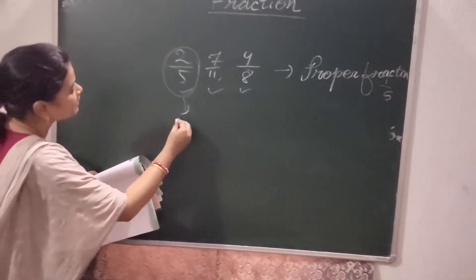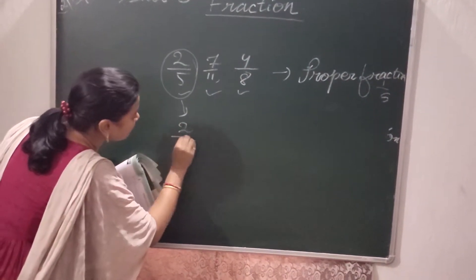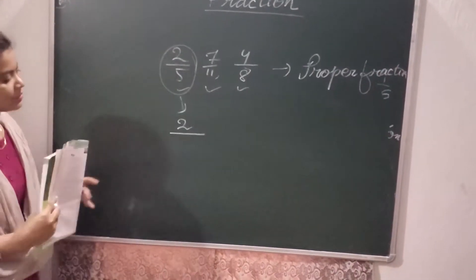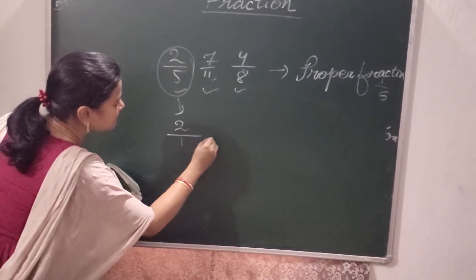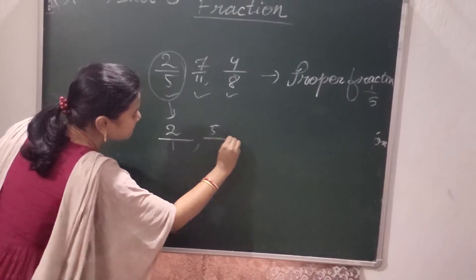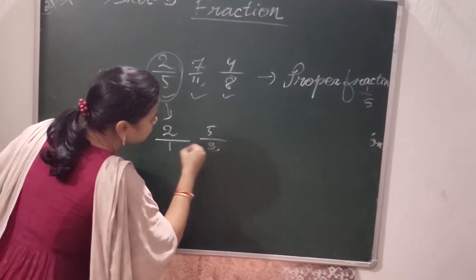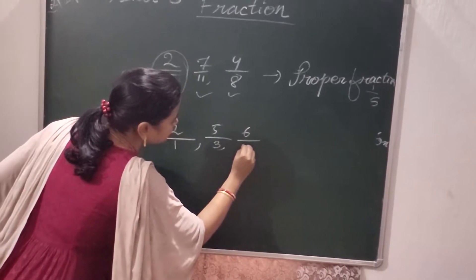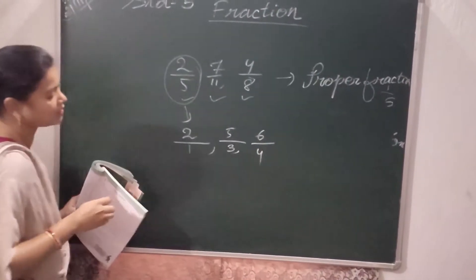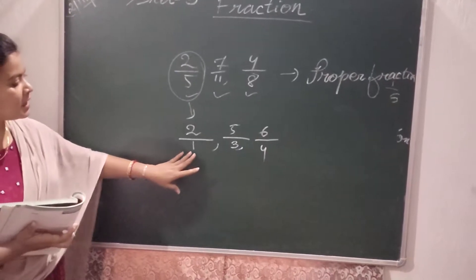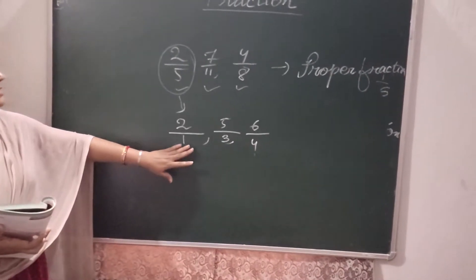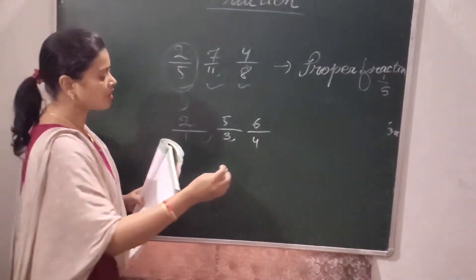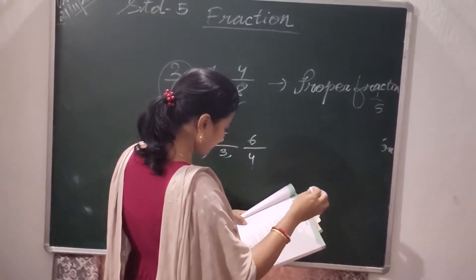Then if the denominator is less than the numerator — look children, here the denominators are less than the numerator — so these fractions are called improper fractions.